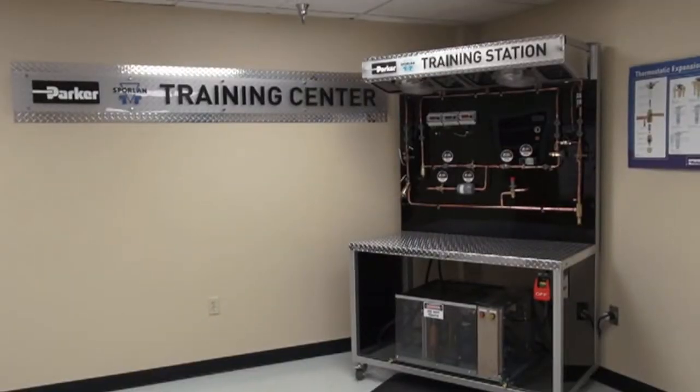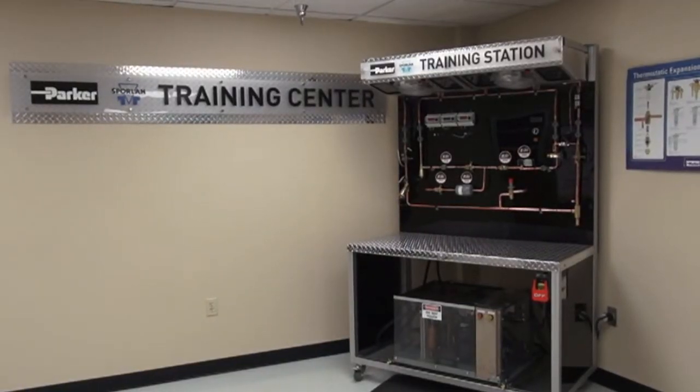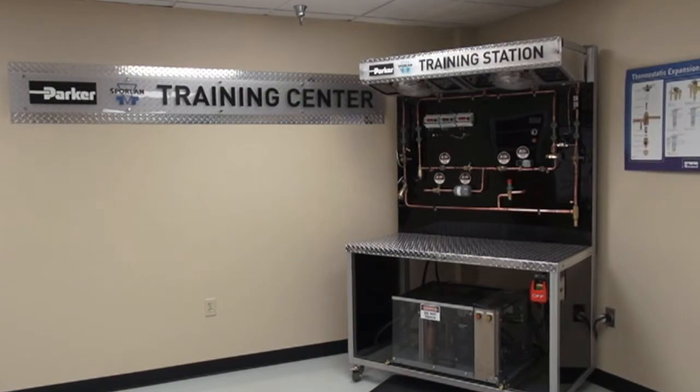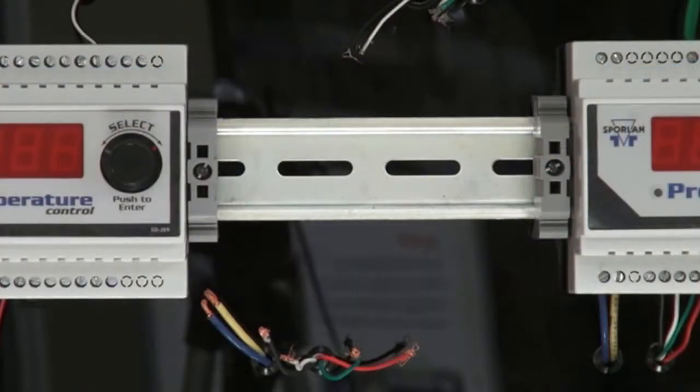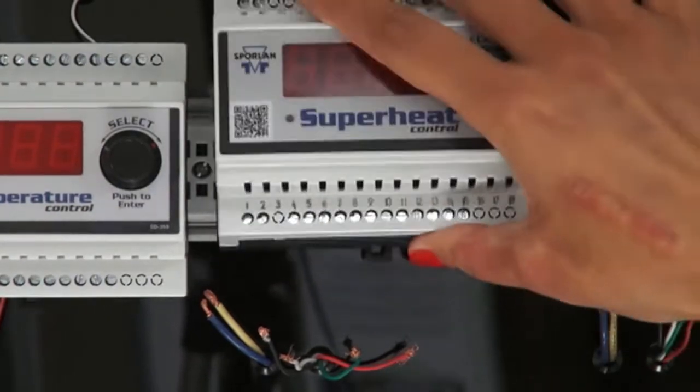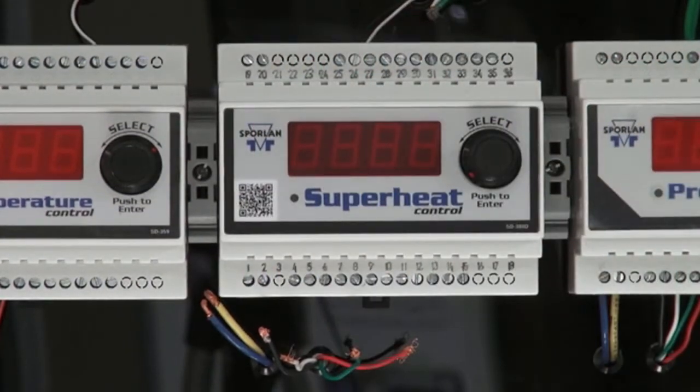This is the Sporland Training Center, and here we have the training station that I'll be using during the installation and wiring portion of this video. First, we're mounting the controller in a raintight protected location using the supplied DIN rail. Be sure to leave enough working space. We suggest the mounting area to be 10 inches high, 5 inches wide, and a minimum depth of 3 inches.